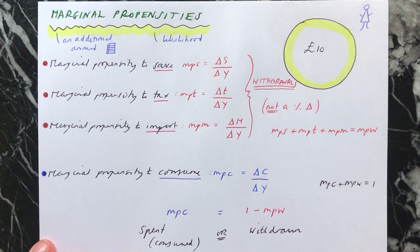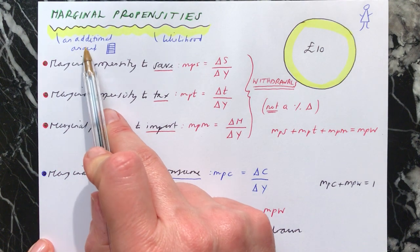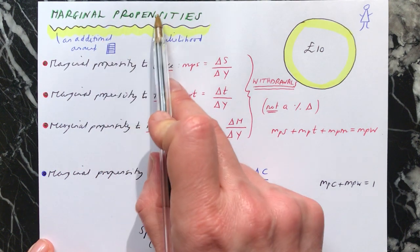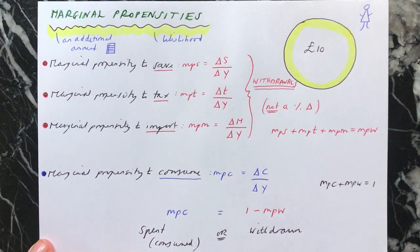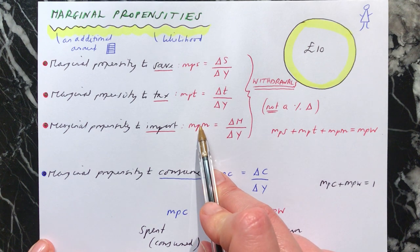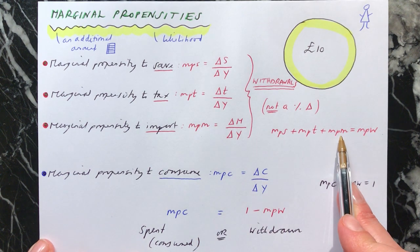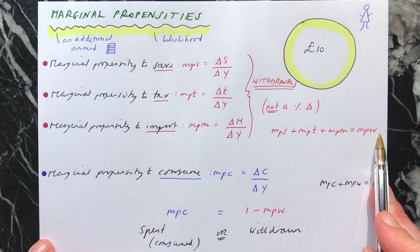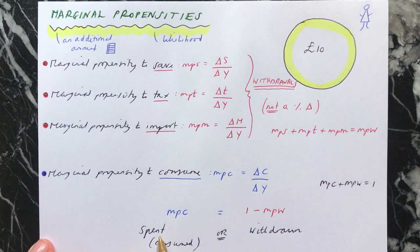And for someone who doesn't know, this all sounds very complicated. There are lots of different marginal propensities. But you just need to go back to the beginning and look and say to yourself, marginal just means an additional amount. And the propensity is your likelihood that you're going to do something with it. And you have the three types of withdrawals. And all together, these marginal propensities add up to just the marginal propensity to withdraw. And if you're not withdrawing the money from the economy, then you are spending the money. So therefore, the marginal propensity to consume plus the marginal propensity to withdraw must equal 1.